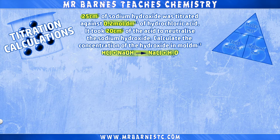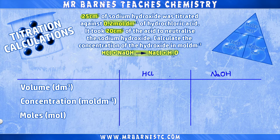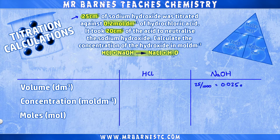The way I would always go about this question is to draw a table with a space for the volume, the concentration and the moles, and then put the two chemicals the question is talking about. The next thing is to put the information from the question into the table. I have 25 centimetres cubed of sodium hydroxide, which I need to convert into decimetres cubed because the answer is in moles per decimetre cubed. So 25 divided by 1000 gives me 0.025 decimetres cubed.